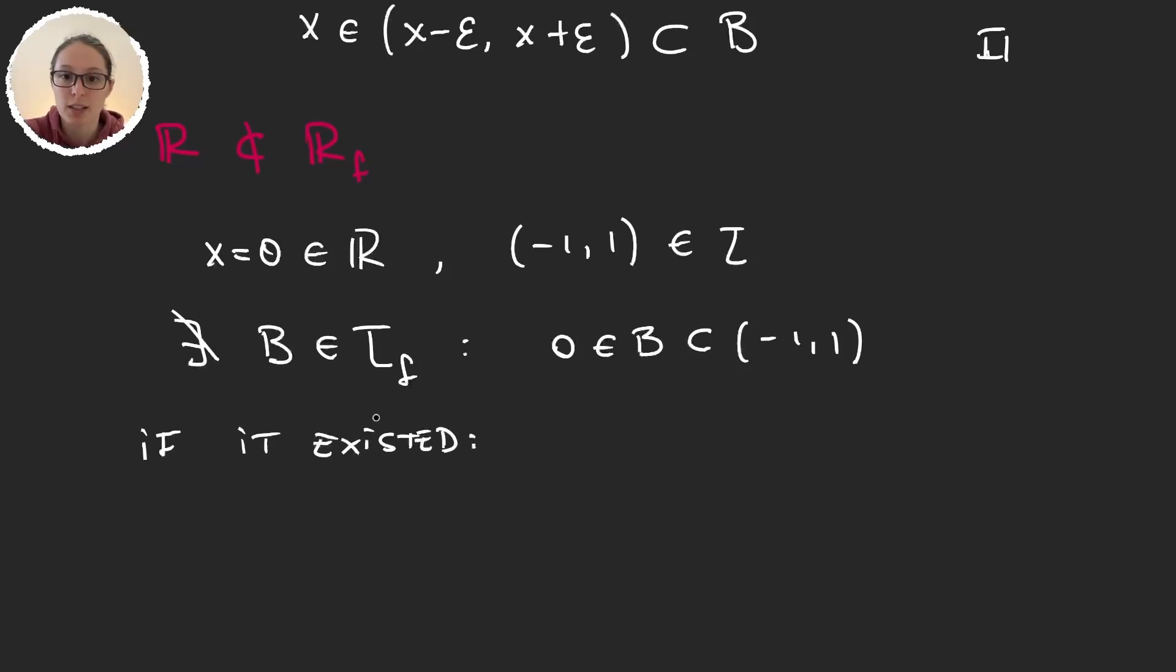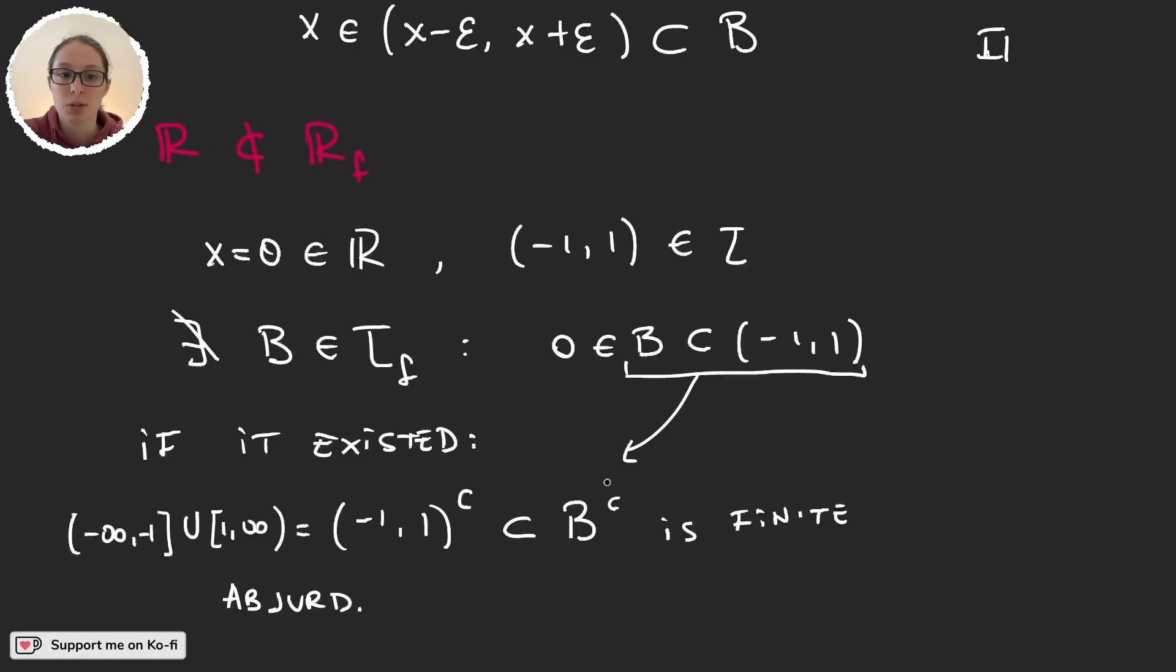If such B existed, then we would have from here that the minus 1, 1 complement is a subset of B complement. This is just basic set theory. But the minus 1, 1 complement, this set is the minus infinity, minus 1, union, 1, infinity. But B complement, because B is in the finite complement topology, this is finite. And this other set clearly is not finite. So this would be an absurd. This proves that such B cannot exist. And so we have that this inclusion does not happen.